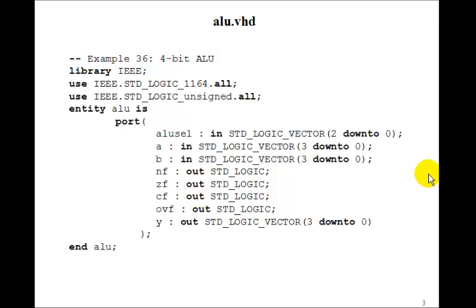Here is the VHDL program to do this. ALU Select will be 3 bits, 2 down to 0. A and B are 4 bits, 3 down to 0. And then the outputs will be the negative flag, the zero flag, the carry flag, the overflow flag, and Y output, 3 down to 0.